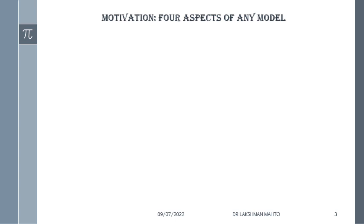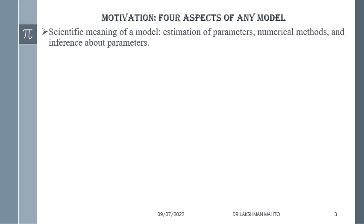Coming to the motivation part of any computational mathematics course, there are four aspects. We call it computational mathematics because it involves modeling a real-world problem into a mathematical framework. The first aspect is model structure — the simplest approach is a parametric approach where you estimate the parameters of the model. That estimation is itself an optimization problem, and to get the optimal parameter we use numerical methods like Newton's method and gradient descent.